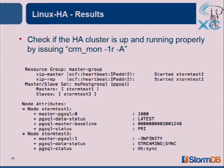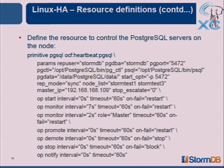If we power off stormtest1, what we expect is that the master and replication IP addresses should fail over to stormtest3, the instance on stormtest3 should become the new master, and stormtest1 should show as offline. When stormtest1 is powered off, CoroSync will tell Pacemaker that one of the nodes is down. Pacemaker will look at its configuration, see there was a master on stormtest1 and a slave on stormtest3, and will try to stop stormtest1 then promote stormtest3.